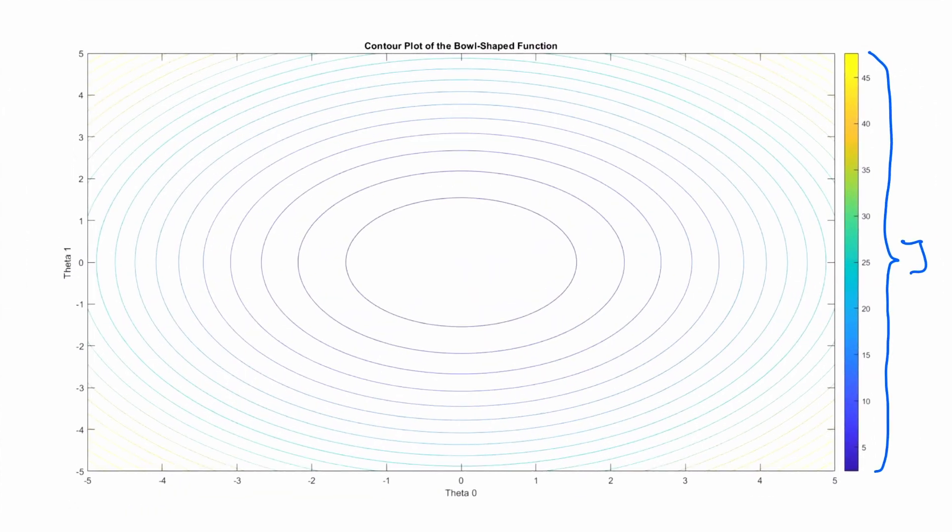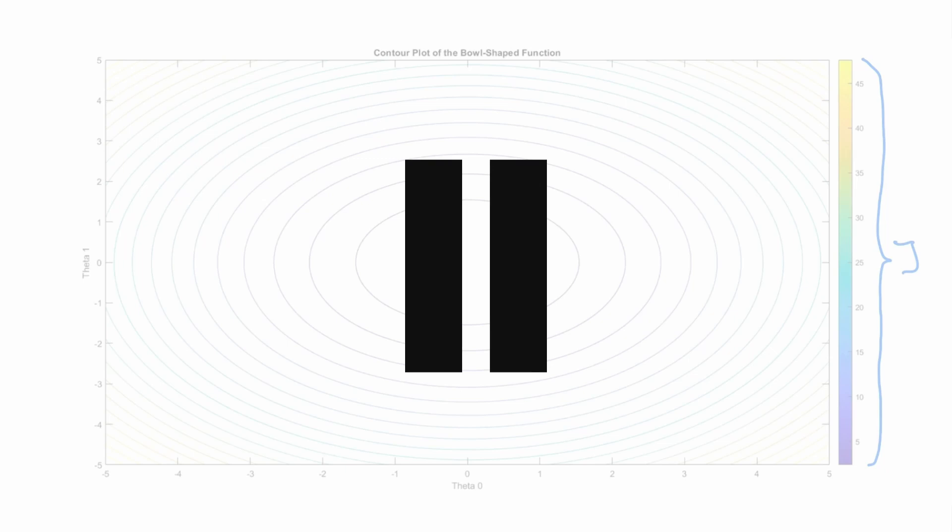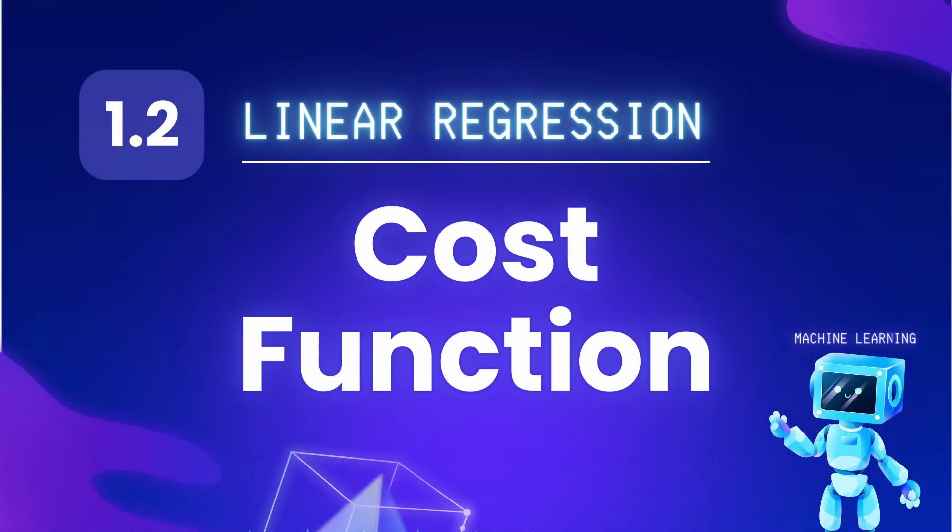To give a quick recap, these plots describe the value of j in function of theta 1 and theta 2, and every circle describes that on every point of that circle we get the same value for j. If you want a more detailed recap of what these contour plots mean, I recommend that you pause the video and check out this video which you can find on the channel.